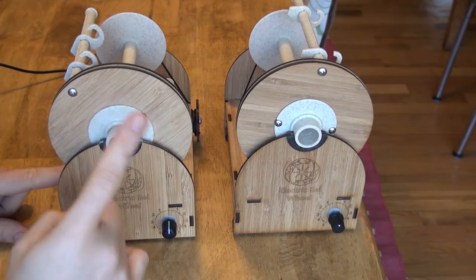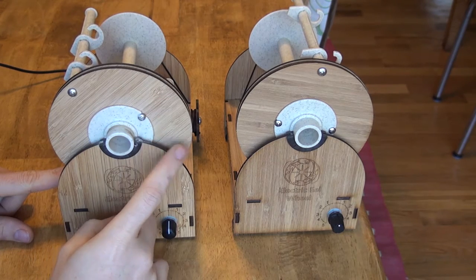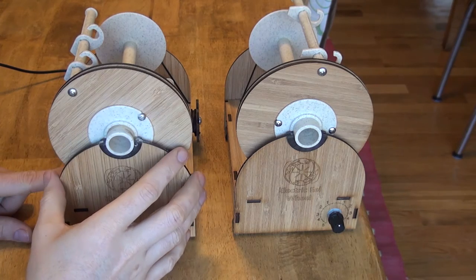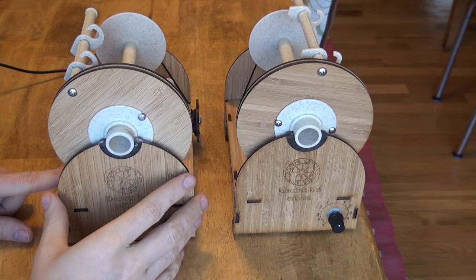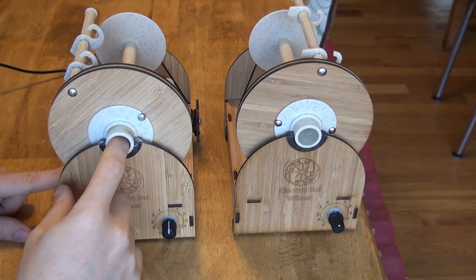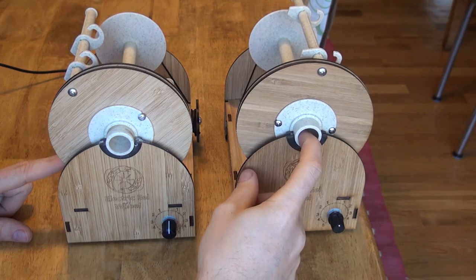Now the reason I have two wheels here is this is one of my test units that has been running for many, many months of continuous run time. It doesn't take that long to kind of get them broken in, but this is the model that I have that was completely broken in. And here's a brand new fresh one.